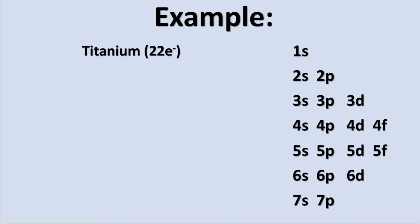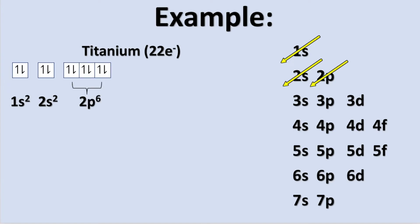If we make our first diagonal, it goes through 1s. So 2 electrons are placed into the 1s orbital, followed by the 2s orbital. Now we have 1s2, 2s2, and we still have 18 electrons to distribute. So we draw another diagonal line and we must fill the 2p orbital, which can hold a total of 6 electrons because remember it has 3 orientations in space. Now we have 1s2, 2s2, 2p6.